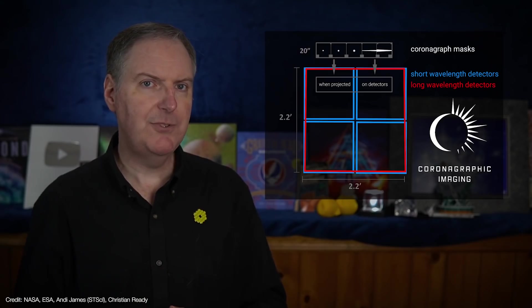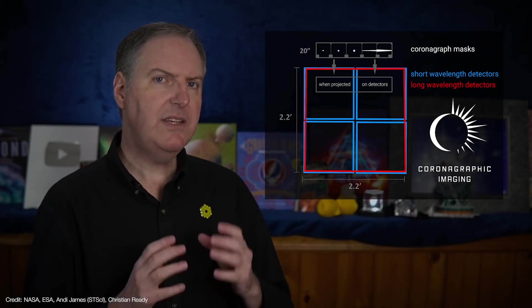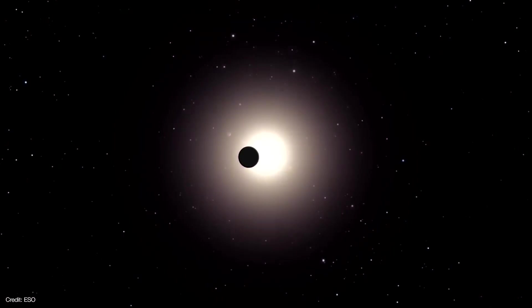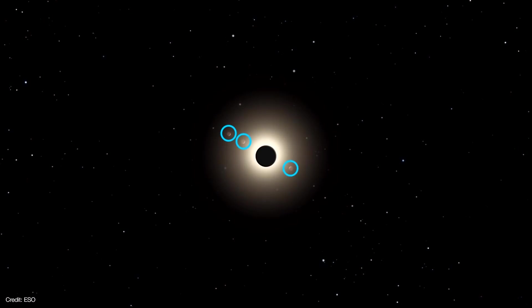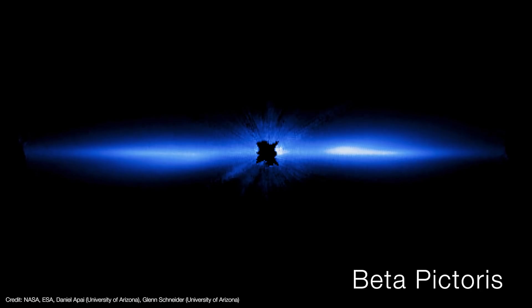Both of NIRCam's modules include an array of coronagraphic masks. These are tiny disks or bars that can block out the light from a bright object to reveal fainter objects next to them. One of its early uses will be to block out the star Beta Pictoris to study its surrounding protoplanetary disk.